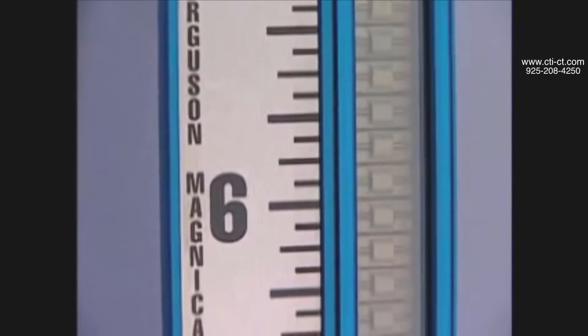The new Jergesen Magnicator Flash Proof Gauge features a unique chamber design to eliminate problems from boiling liquids and flashing vapors.